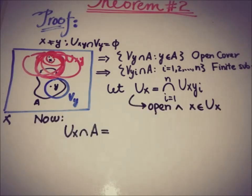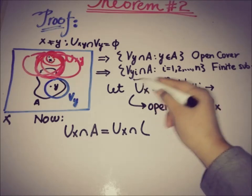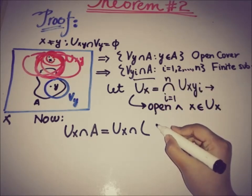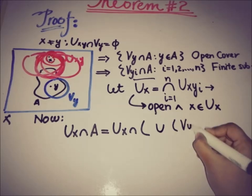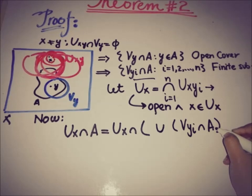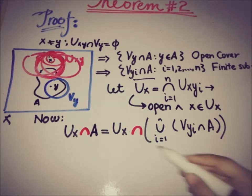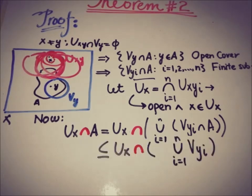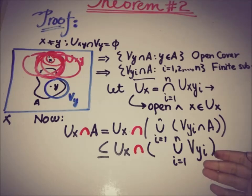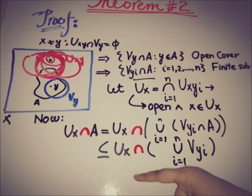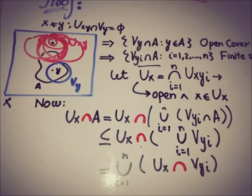We check the intersection of U_x and A. Since A is covered by the finite subcollection of V_{y_i}'s, we can write U_x ∩ A ⊆ U_x ∩ (∪ V_{y_i}), where i varies from 1 to n. By the distributive property of unions, this becomes the union from 1 to n of (U_x ∩ V_{y_i}).